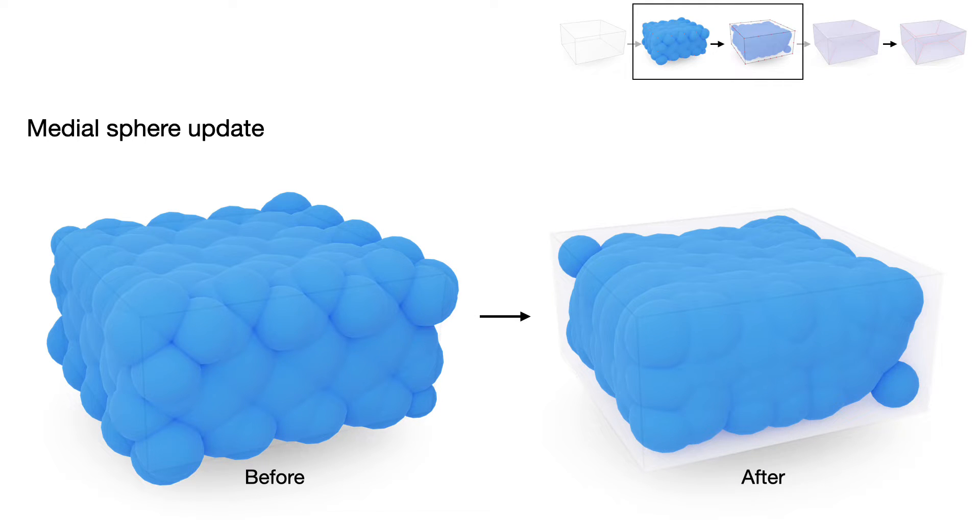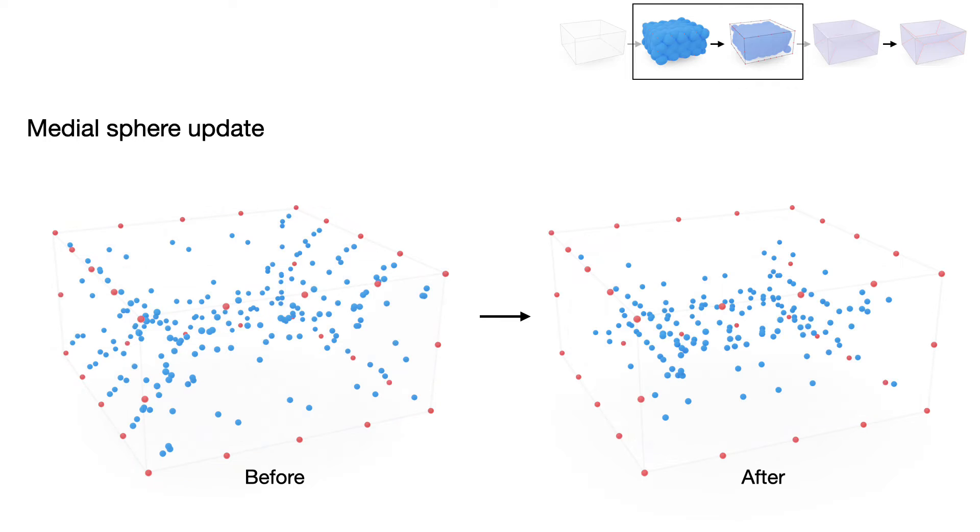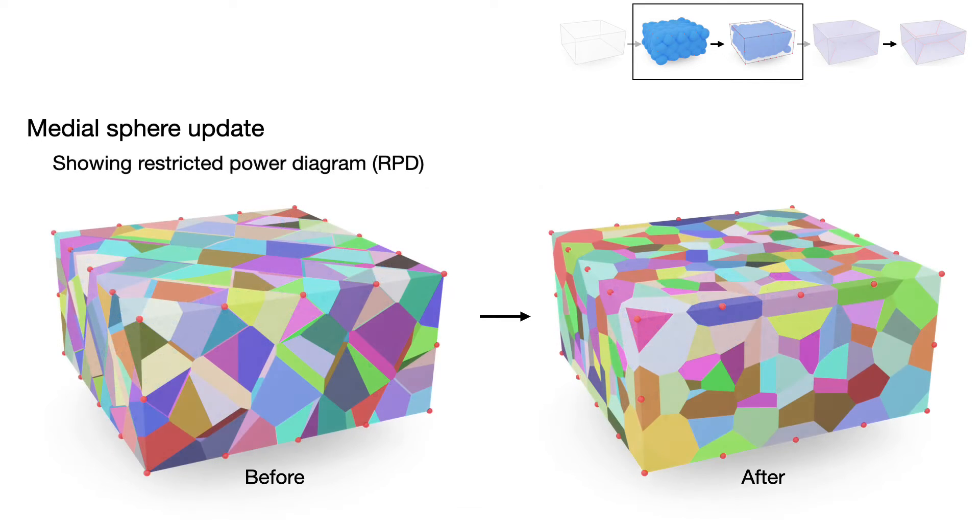In this paper, we formulate the updating algorithm for spheres with any number of tangent points as a continuous optimization problem. We also show the RPD and its corresponding medial mesh structure before and after the update.